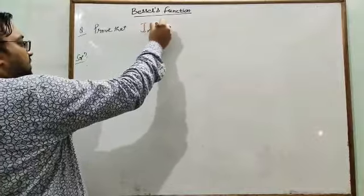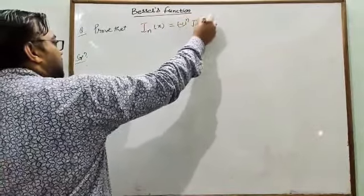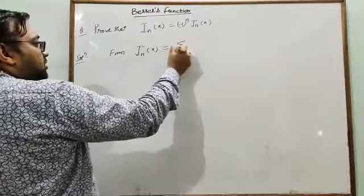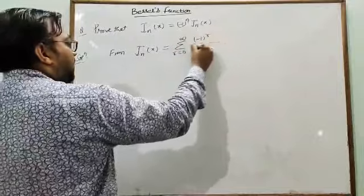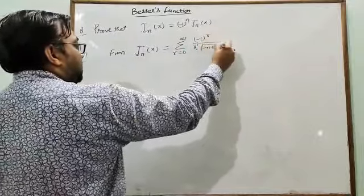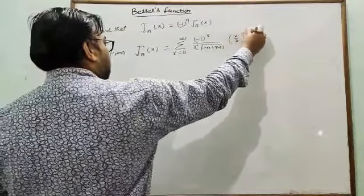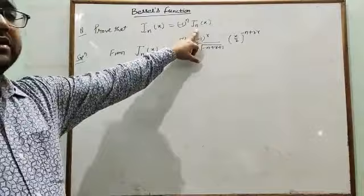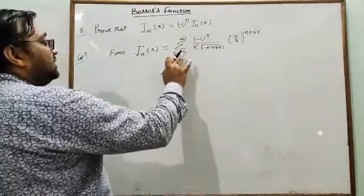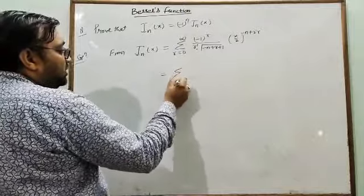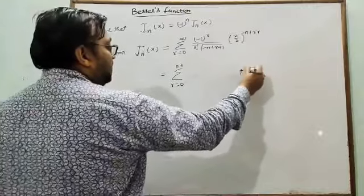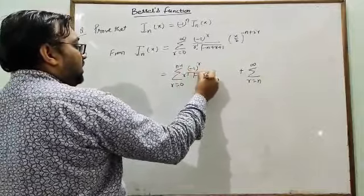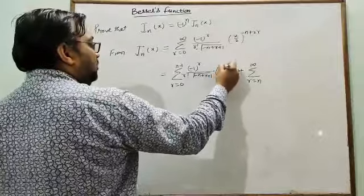Next problem: Prove that J_{-n}(x) = (−1)^n · J_n(x). For the solution, we start from J_{-n}(x) = Σ (r=0 to ∞) [(−1)^r / (r! · Γ(−n + r + 1))] · (x/2)^{−n+2r}. We need to convert this negative index into positive to get J_n(x). We split the summation into two parts: Σ (r=0 to n−1) and Σ (r=n to ∞).